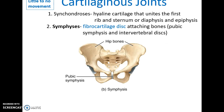Cartilaginous joints have two main kinds. There's synchondrosis — hyaline cartilage that unites the first rib to the sternum, or the diaphysis with the epiphysis in bones that are growing — that is the epiphyseal plate. Then there's the symphysis, where fibrocartilage discs attach neighboring bones. Examples include the pubic symphysis and the intervertebral discs.